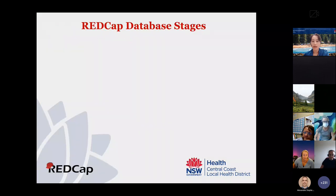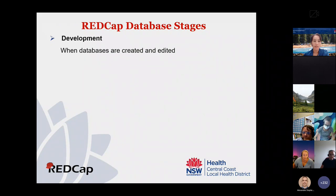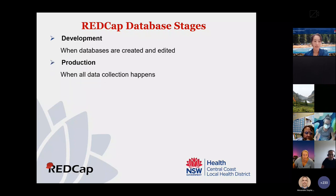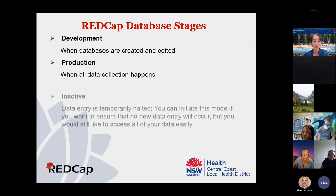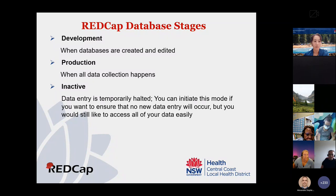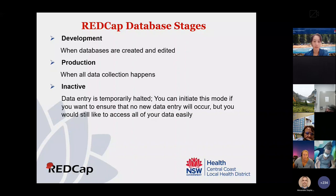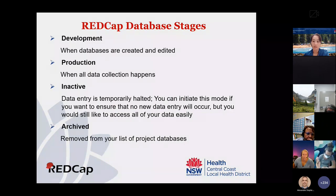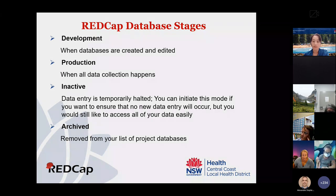The REDCap database has four stages. The first is Development — this is when databases are created and edited. The second is Production — this is when all data collection happens. The third is Inactive — data entry is temporarily halted; you can initiate this mode if you want to ensure no new data entry will occur but would still like to access your data. Finally, the project can be Archived — the project is removed from your list of project databases, but your organization's REDCap administrator can always turn it back to production mode.